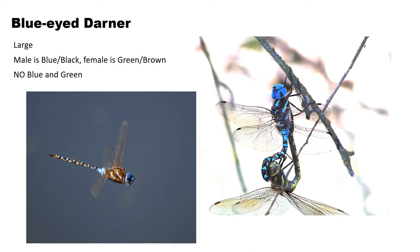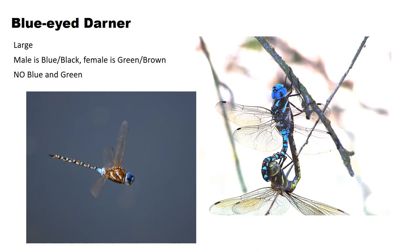This is the blue-eyed darner — still a large dragonfly, about three inches by three inches. The male is blue and black and the female is green and brown. Importantly, neither the male nor female has blue and green together on the same individual, unlike the green darner. So if you look out and see blue and green on the same dragonfly, it's the green darner. The blue-eyed darner is blue and black, or green and brown on the female — no blue and green.